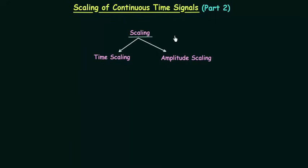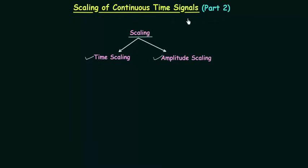Scaling of continuous and discrete time signals is of two types: time scaling and amplitude scaling. In the previous lecture, we completed time scaling of continuous time signals. In this lecture, we will discuss amplitude scaling of continuous time signals. In case of amplitude scaling, we multiply the amplitude of a signal by a real number.